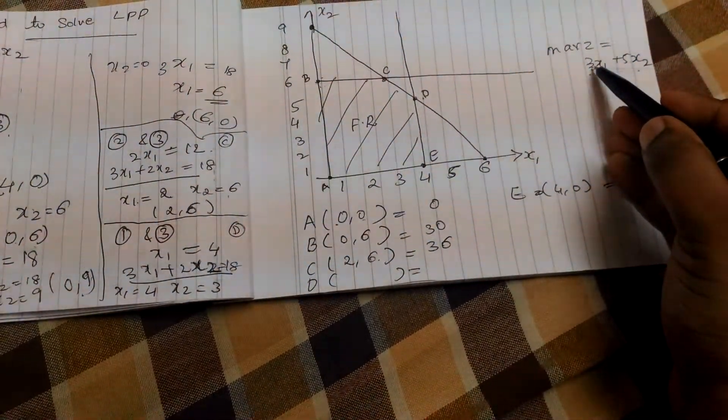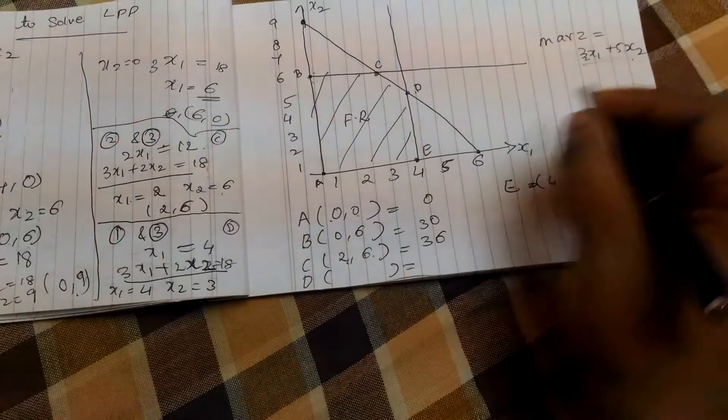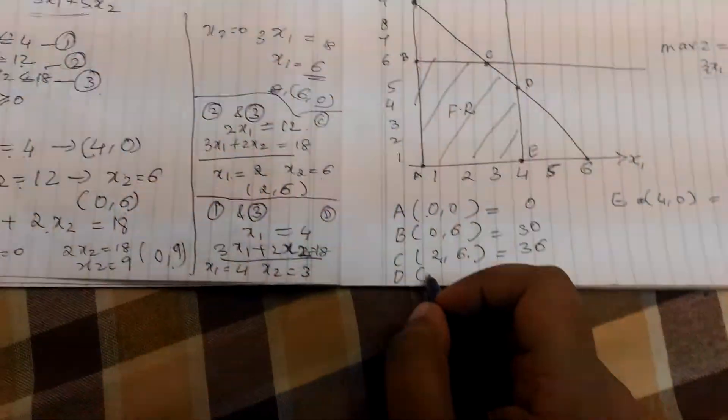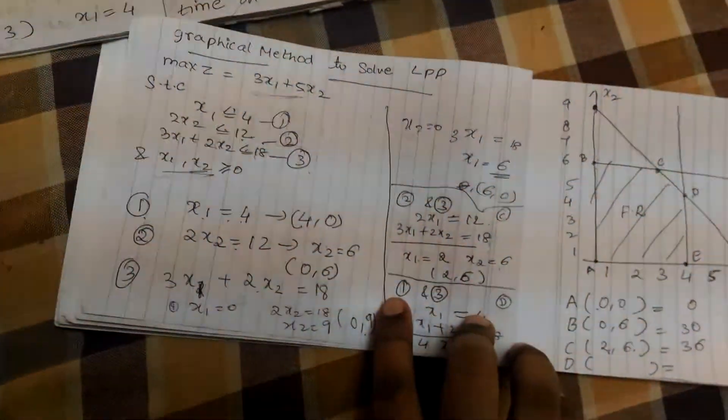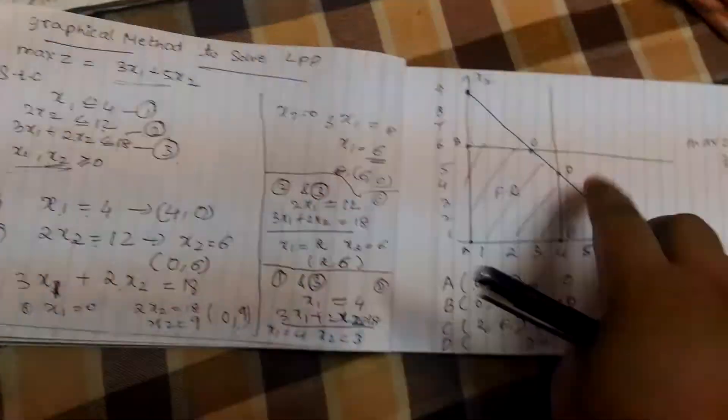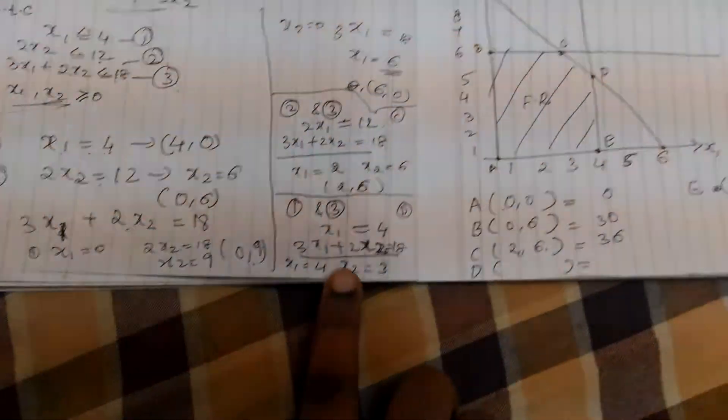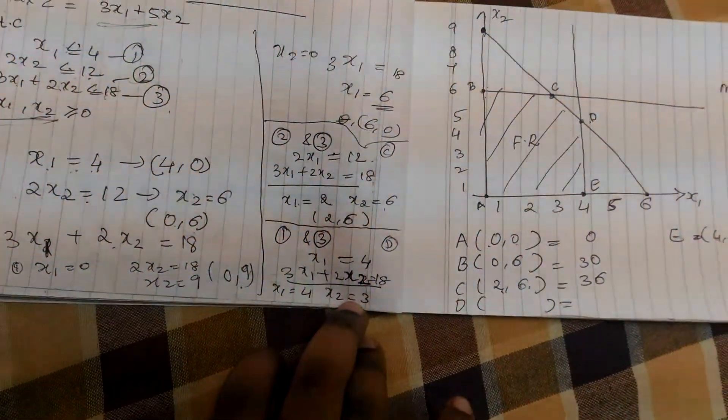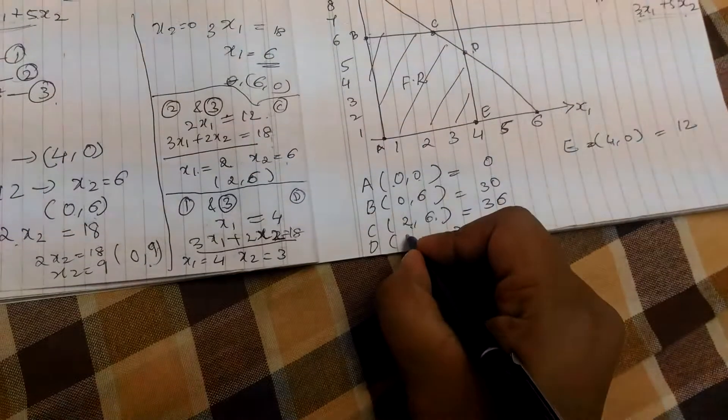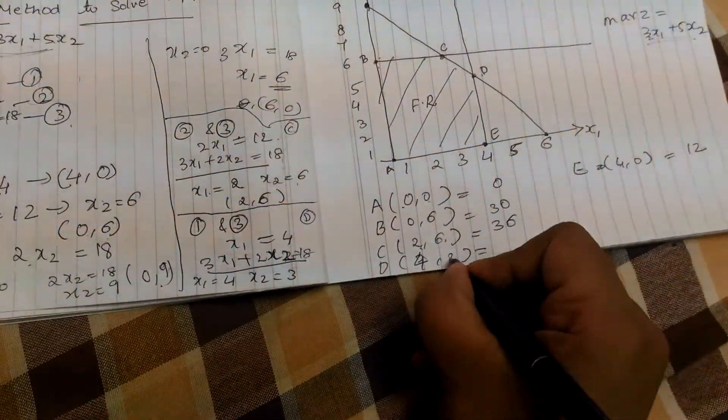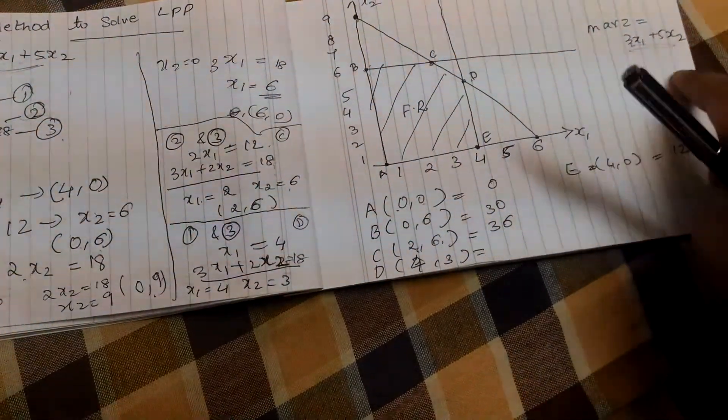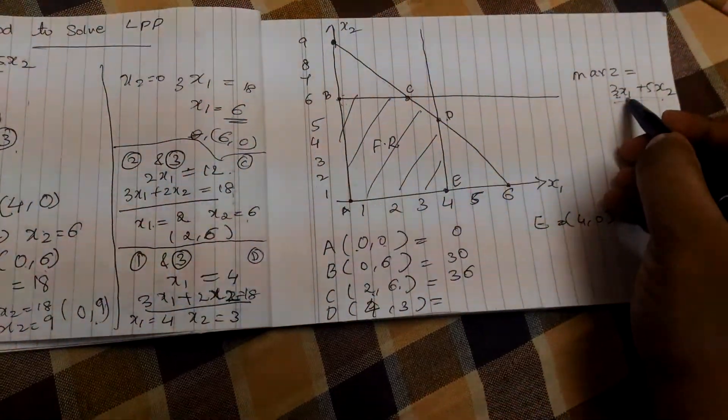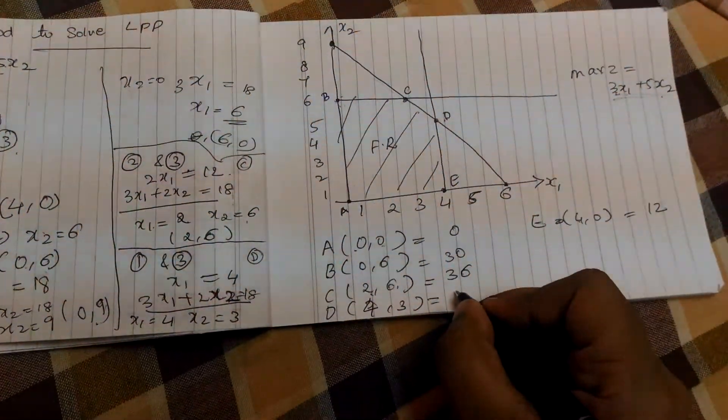So, once again, I'll repeat. 3 into 2, x1 value as 2. And 5 into 6, x2 value as 6. So, it becomes 36. And, d value we get by solving equation 1 and 3. This line and this line. And, here, we get value of x and y as x1 is 4 and x2 as 3. Write it here. 4, 3. Substitute this in objective function. 3 into 4 plus 5 into 3. The value is 27.